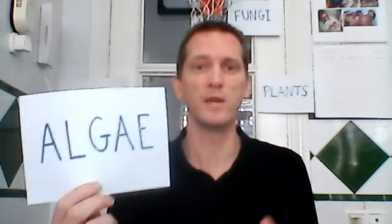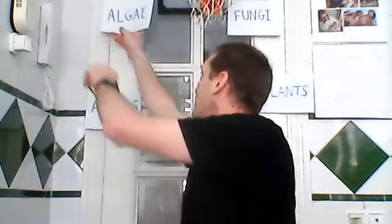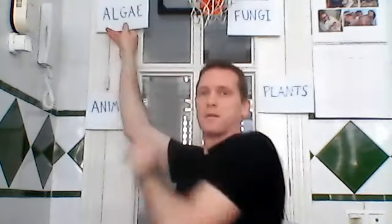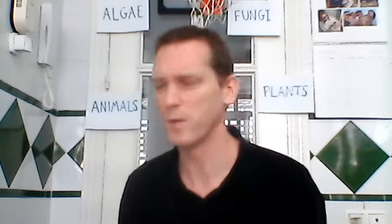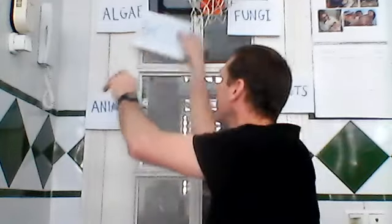In our book, they said there was one more group — really two things — called other organisms. They included algae, which refers to seaweed, and it's not the same as plants. So algae I'll put up here. And there's one more group: tiny microscopic organisms called bacteria. I'll put that here.